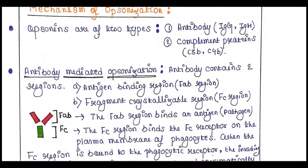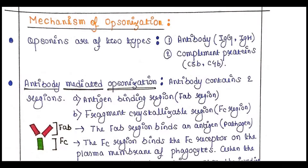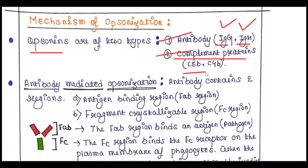Opsonins are of two types. First are antibodies — immunoglobulin G (IgG) and immunoglobulin M (IgM) are the most potent opsonins. Second are the complement proteins — among complement proteins, C3b and C4b are the most potent opsonins.